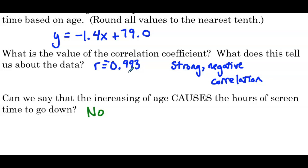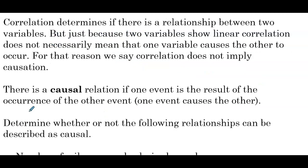Correlation just means: looking at the scatter plot, do the actual points represent a linear relationship? Do the points show a strong, weak, or moderate linear relationship? Cause and effect requires us to think about what the data sets are and whether there is a reason that one would cause the other. Correlation determines if there is a relationship between two variables, but just because two variables show linear correlation does not necessarily mean that one variable causes the other to occur. For that reason, we say correlation does not imply causation.